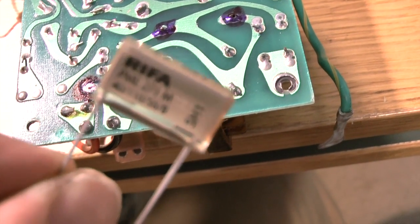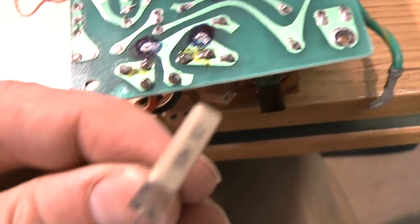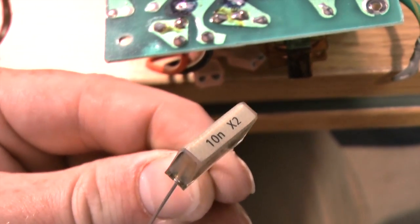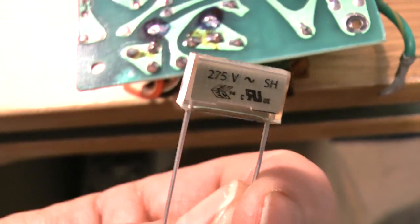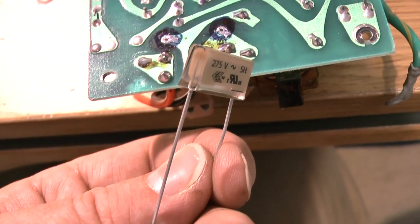So this is the replacement. Good quality capacitor. 10 nF again, X2. And this is rated 275 volts AC. And we'll just install that and then do C2.